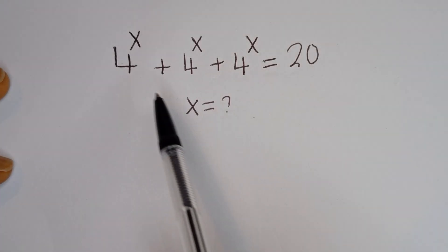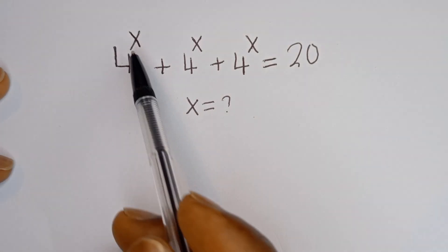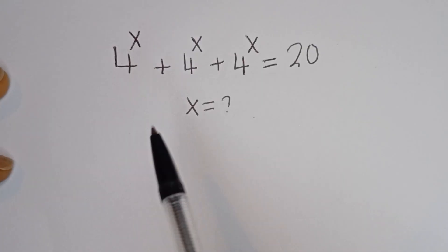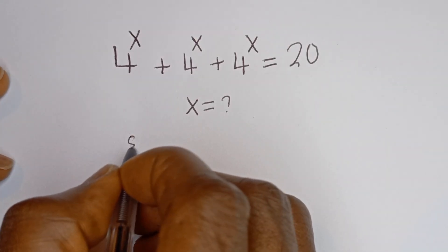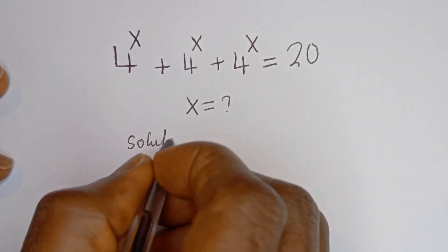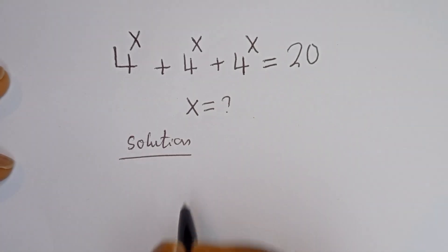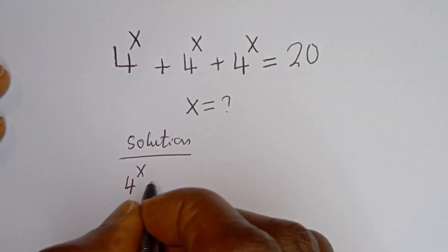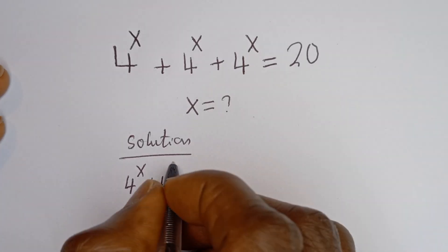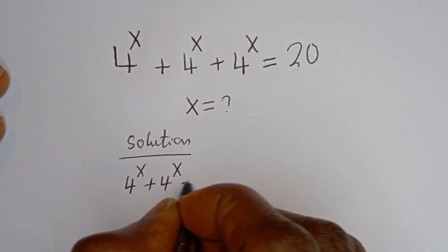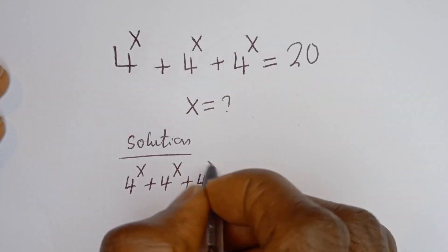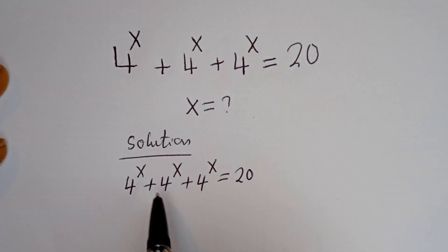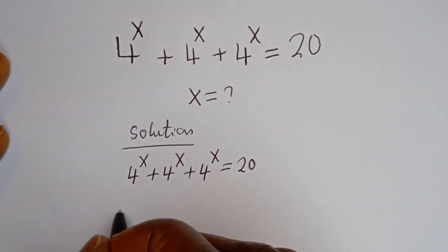Hello. How to solve for s in this equation: 4 to the power of x plus 4 to the power of x plus 4 to the power of x is equal to 20. So here we have 4 to the power of s plus 4 to the power of s plus 4 to the power of s is equal to 20. 4 to the power of s is common, let's bring it out.